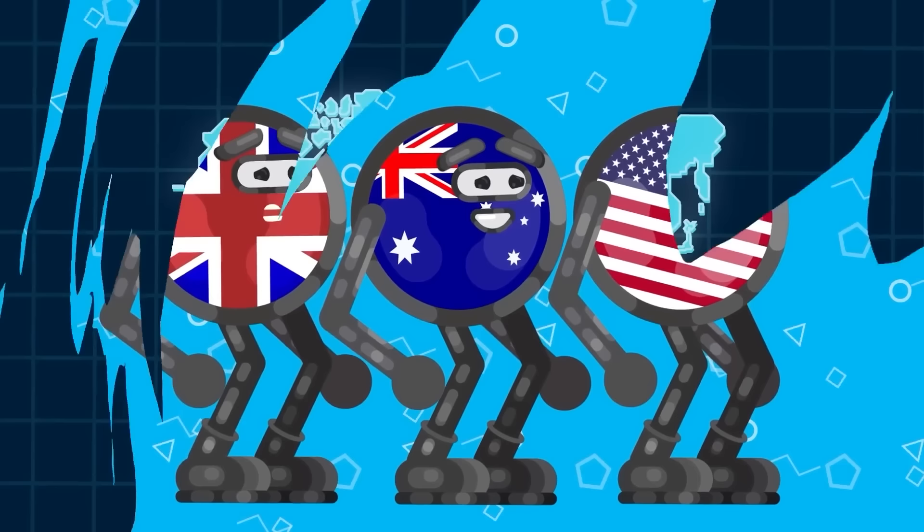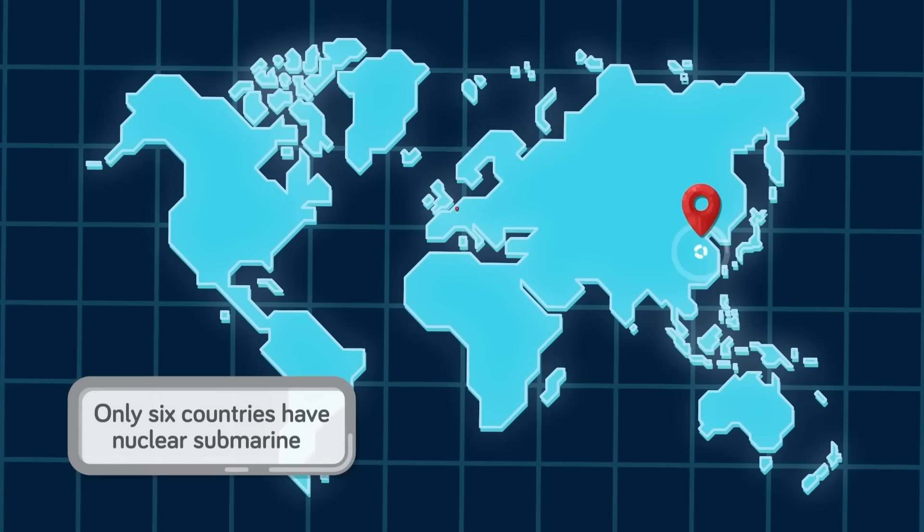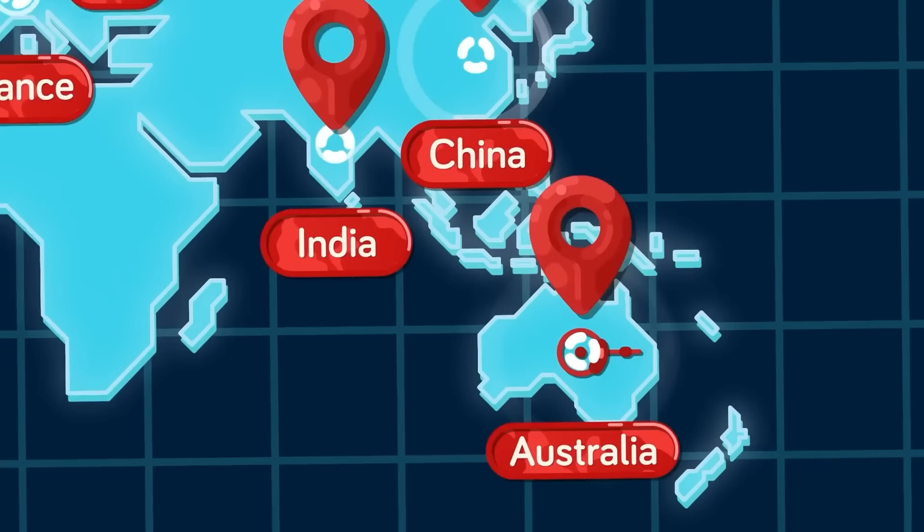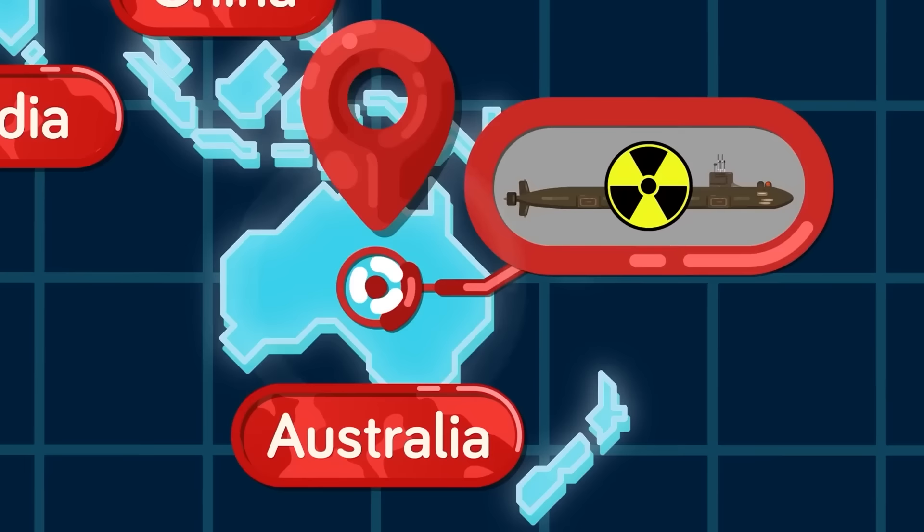As it stands right now, only six countries have nuclear-powered submarines. There are China, France, Russia, the United Kingdom, the United States, and India. So Australia would only be the seventh nation in the entire world to have nuclear-powered underwater vessels. There are a few reasons why so few countries have nuclear-powered ships, but one of them is access to the necessary materials.